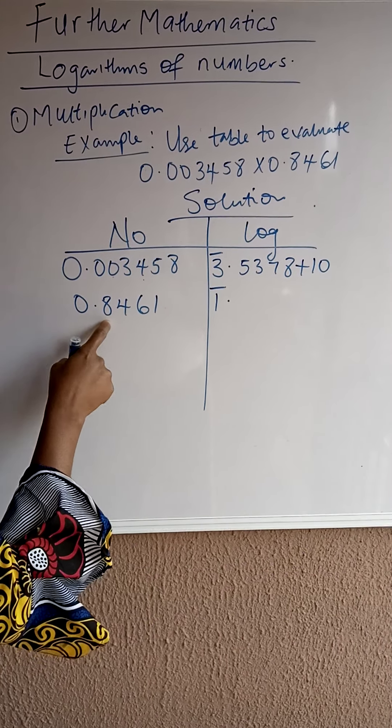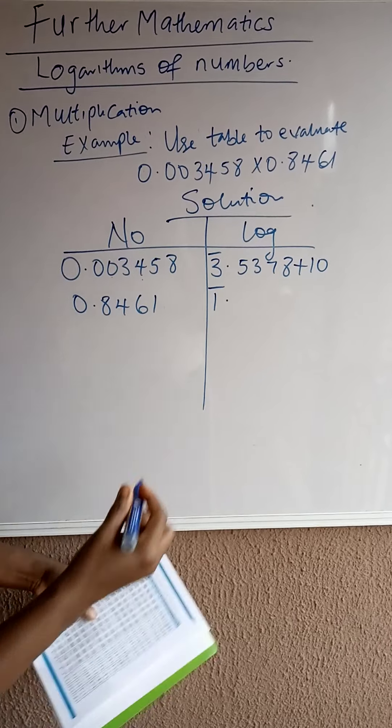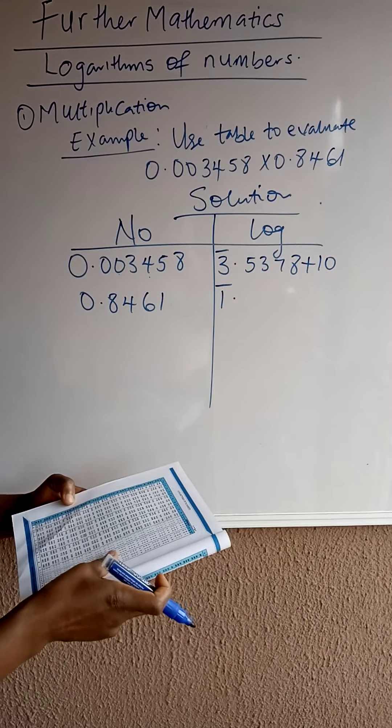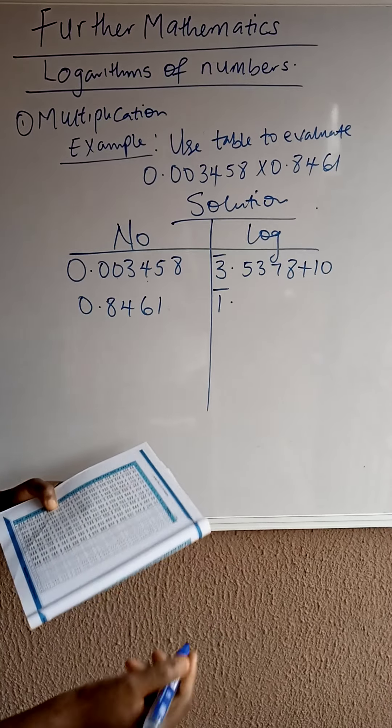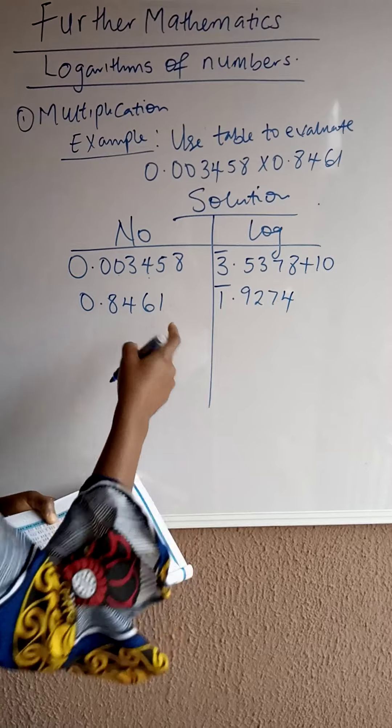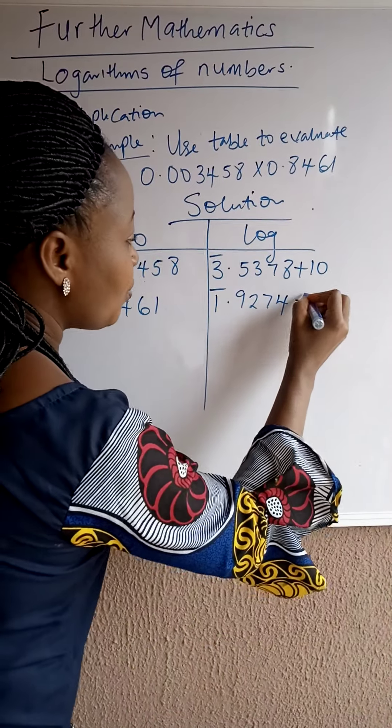The second one, we will look for the logarithm of 84 under 6. 84 under 6 will give us 9274. Then, difference 1. That's plus 1.